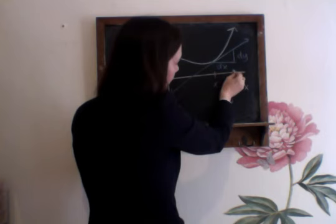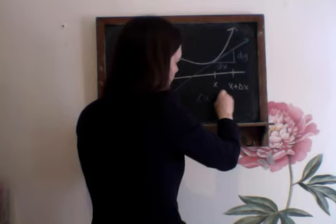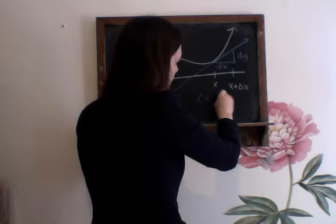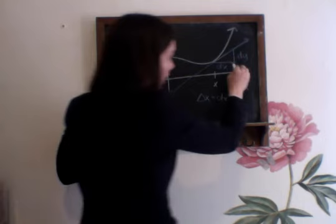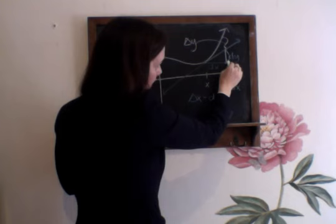So the change in x for the tangent line and the function is the same. But notice that the difference in y values is slightly different. Here, this whole difference here, this is the actual change in y values, delta y. But this piece here, the change in the tangent line is dy.